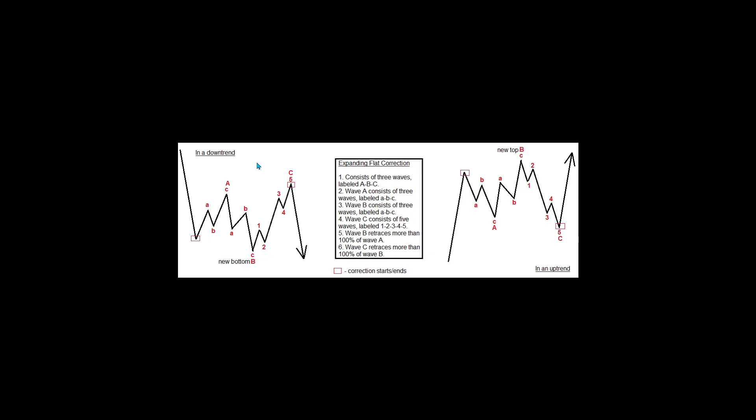In our website's education section, there is a lesson called Elliott Wave Patterns, where you can learn in detail about all three variations of the flat correction. The most important thing you should know about a flat is its wave structure. It consists of three waves labeled ABC. Waves A and B have three subwaves, while wave C is a five-wave impulse.